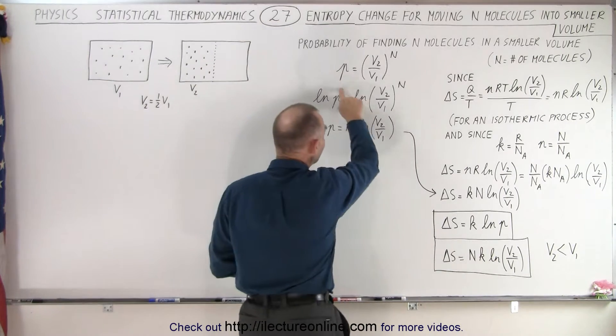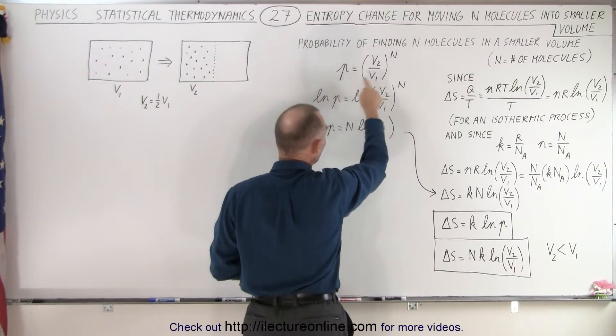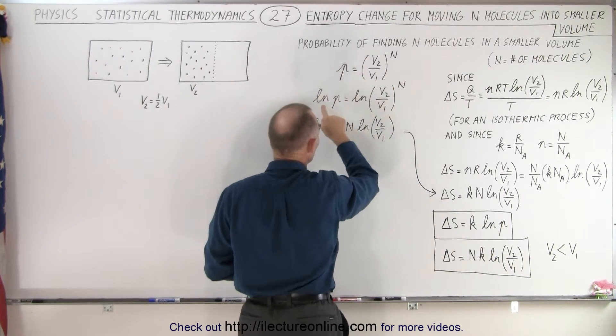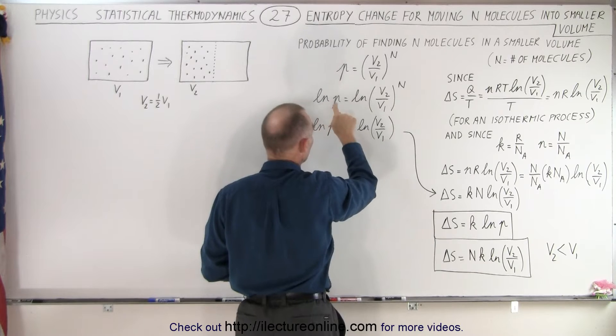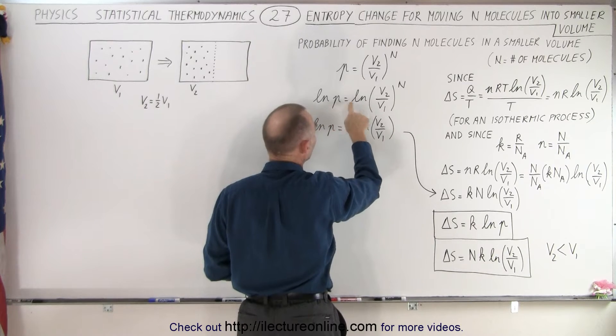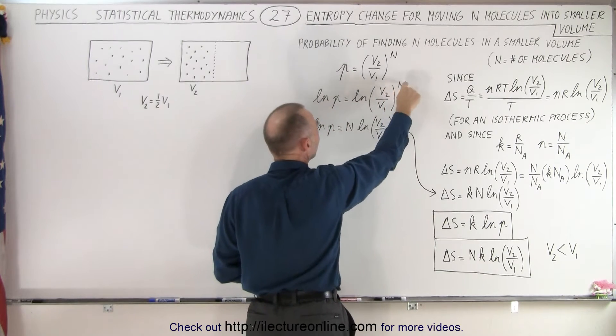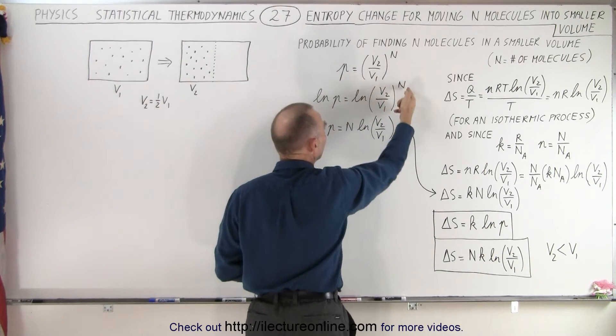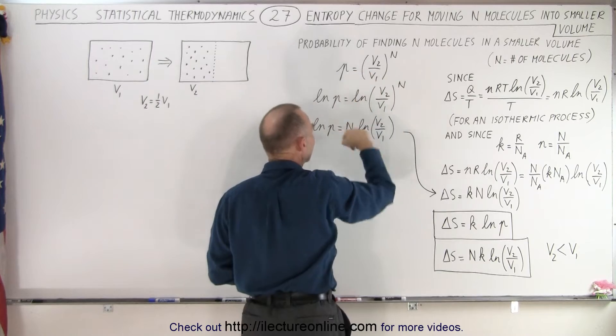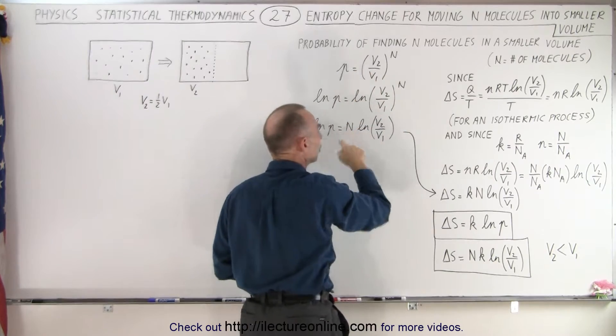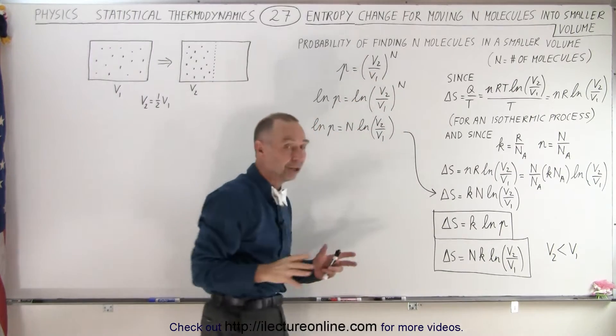If we now take the natural log of both sides, we have the natural log of the probability equals the natural log of the ratio of the volumes raised to the N power. We can then bring the N out in front.